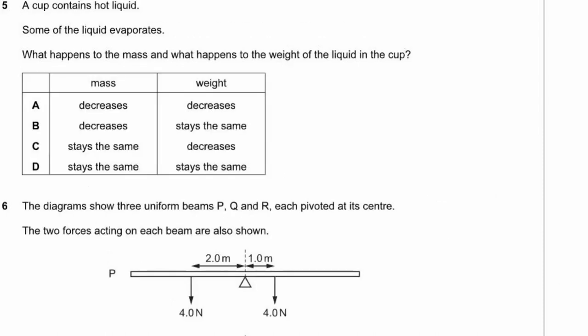Question 5. A cup contains hot liquid and some of it evaporates. What happens to the mass and weight of the remaining liquid? If liquid evaporates, we have less liquid in the cup, so both the weight and the mass will decrease. Option A.